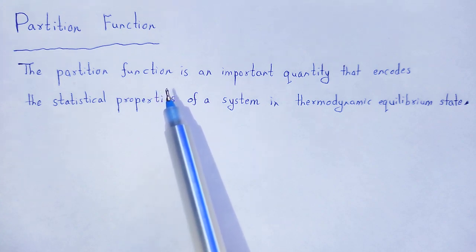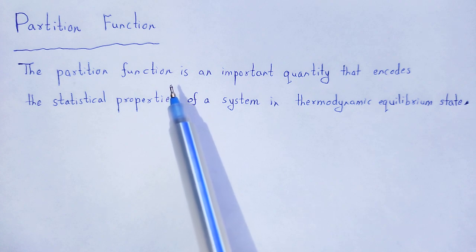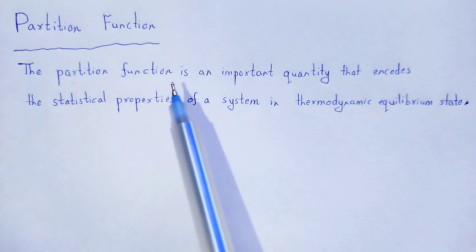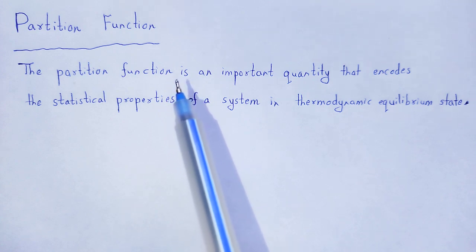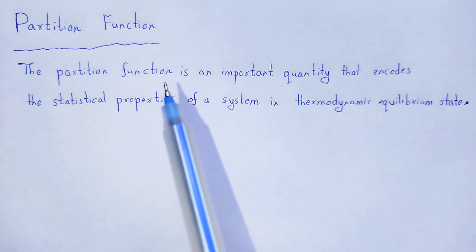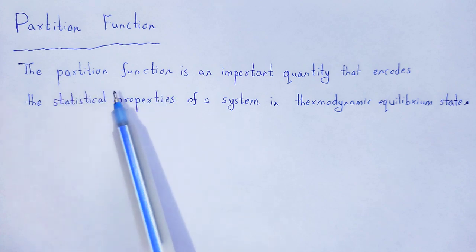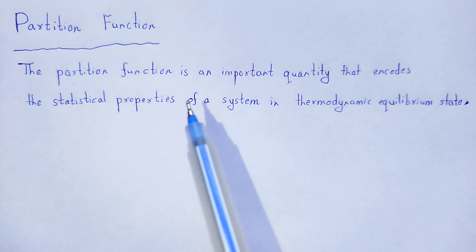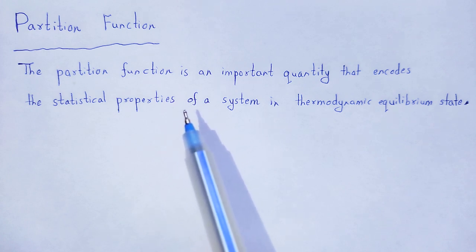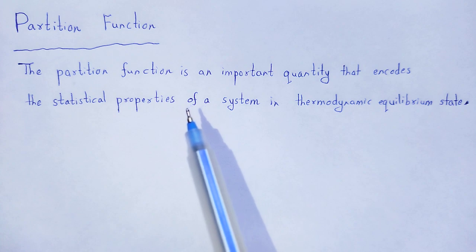If we compare statistical physics with quantum mechanics, in case of quantum mechanics we take wave function psi. By using that wave function psi, we describe the physical properties of that particular system. In the same way, by using the partition function, we can easily describe the physical properties of that system, provided the condition that that system is in a thermal equilibrium state.